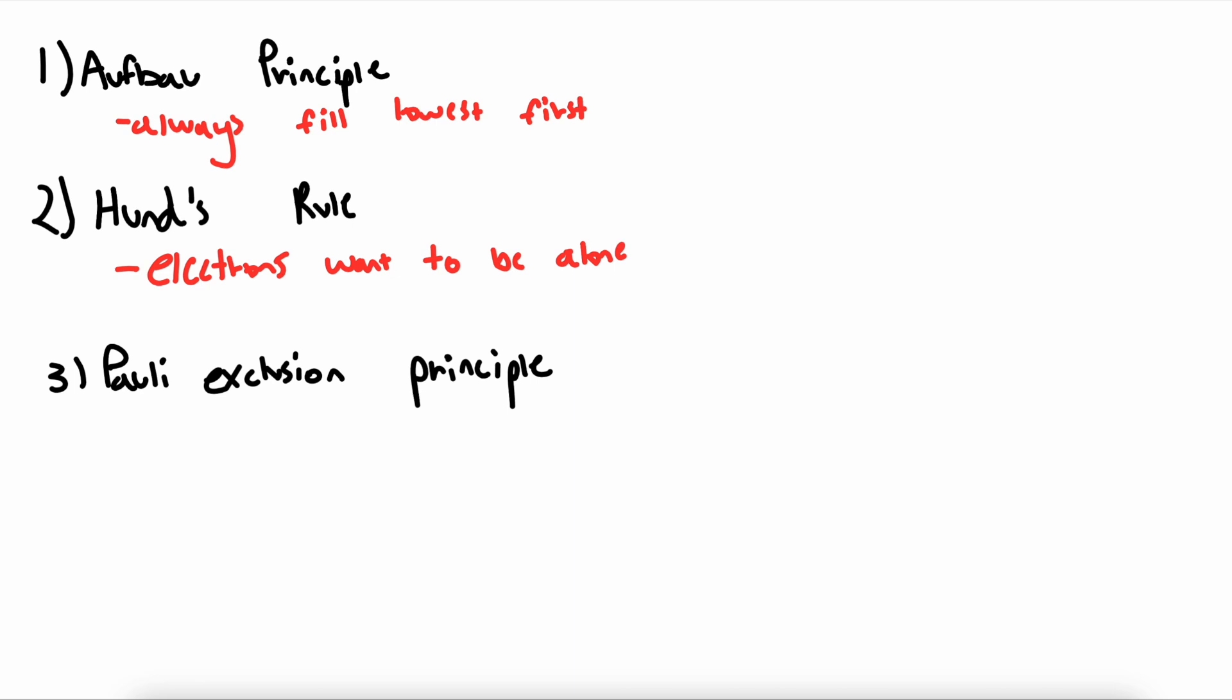And then lastly, we have the Pauli exclusion principle. The Pauli exclusion principle states that each electron in an orbital must have a unique quantum number. This sounds complex, but really it just means that because each orbital can only hold two electrons, they must have opposite spins, which we denote by up and down arrows.